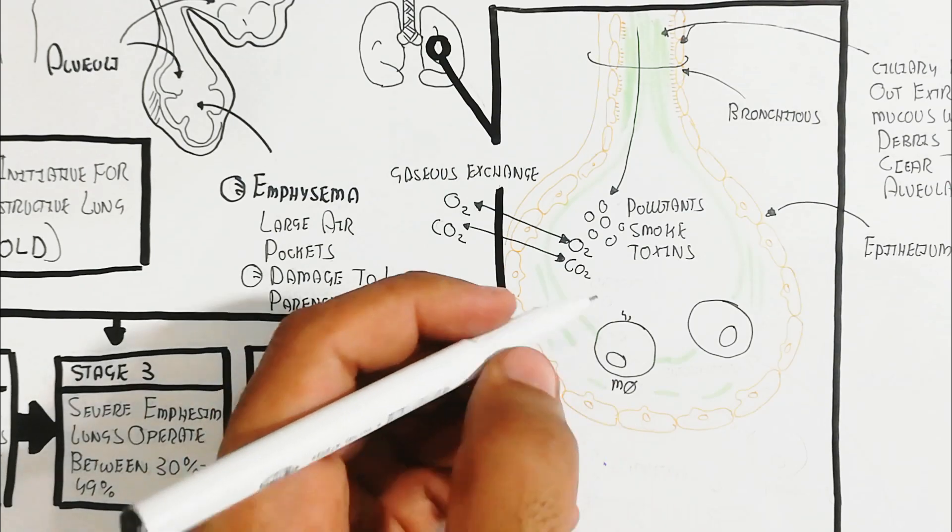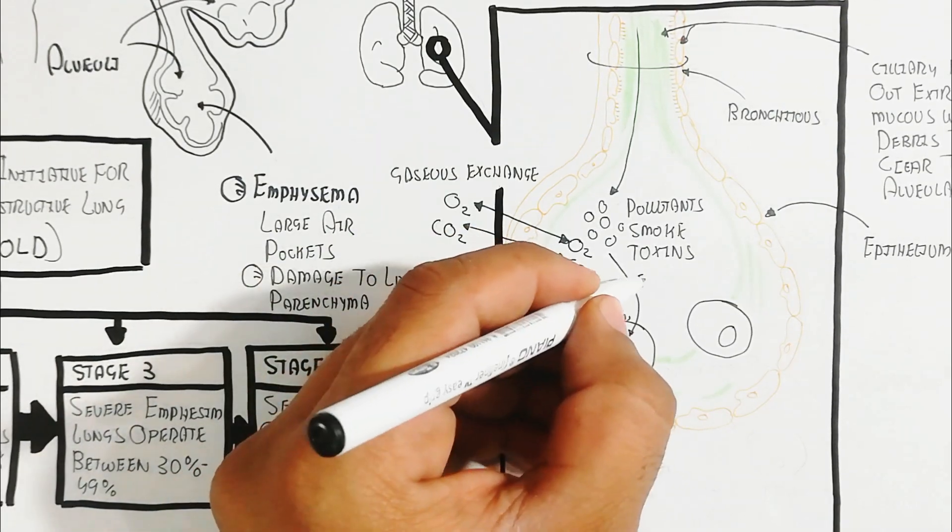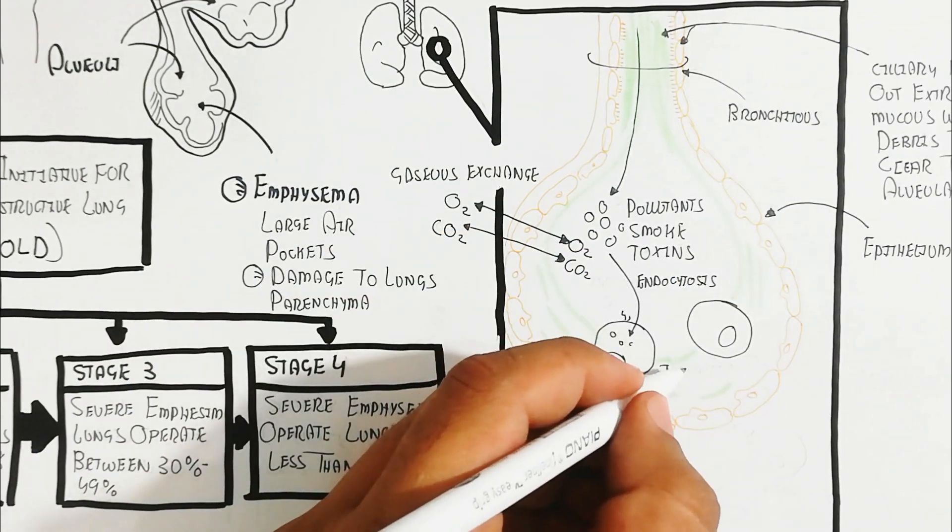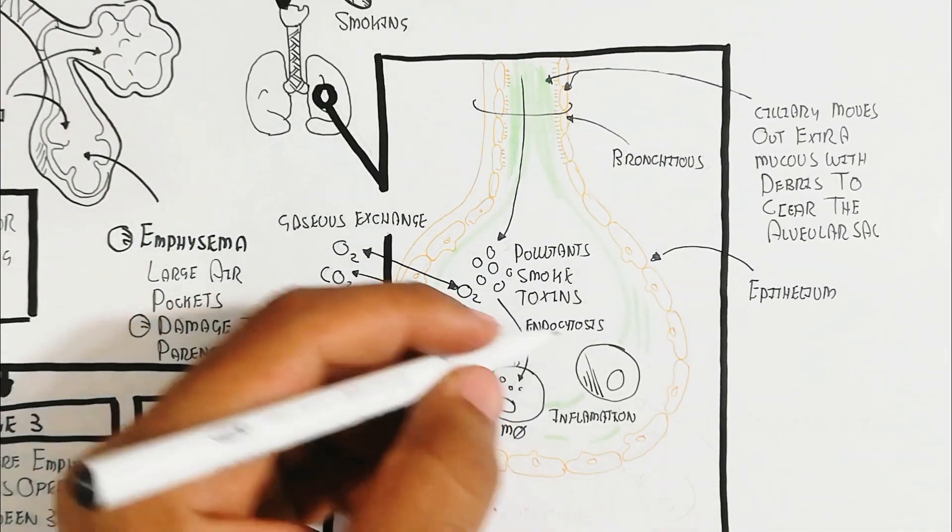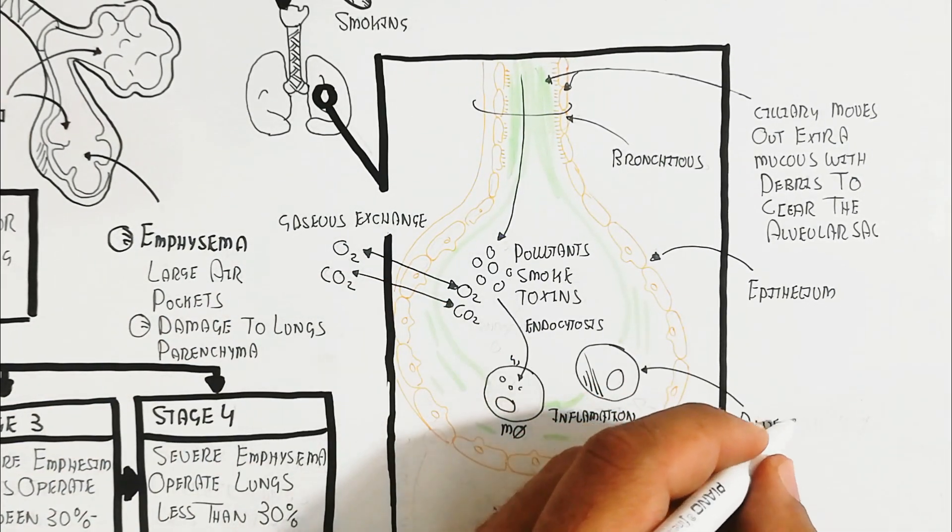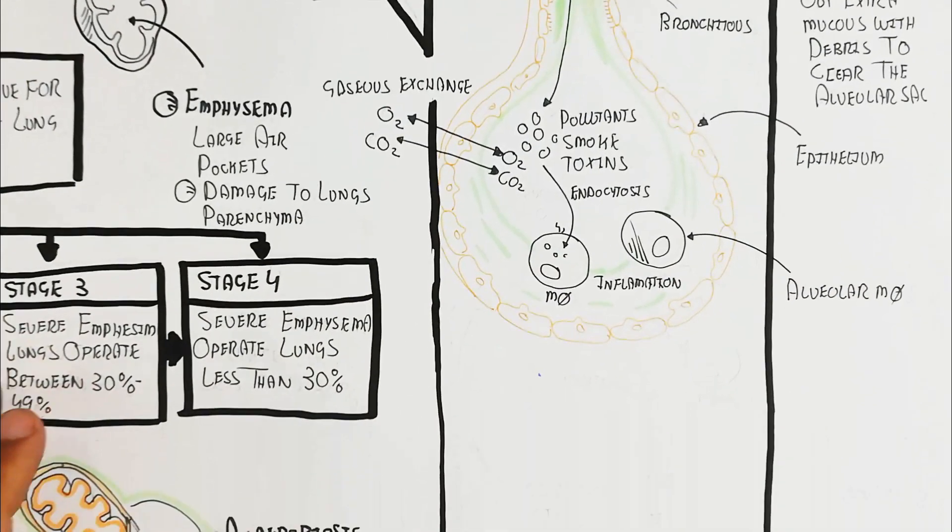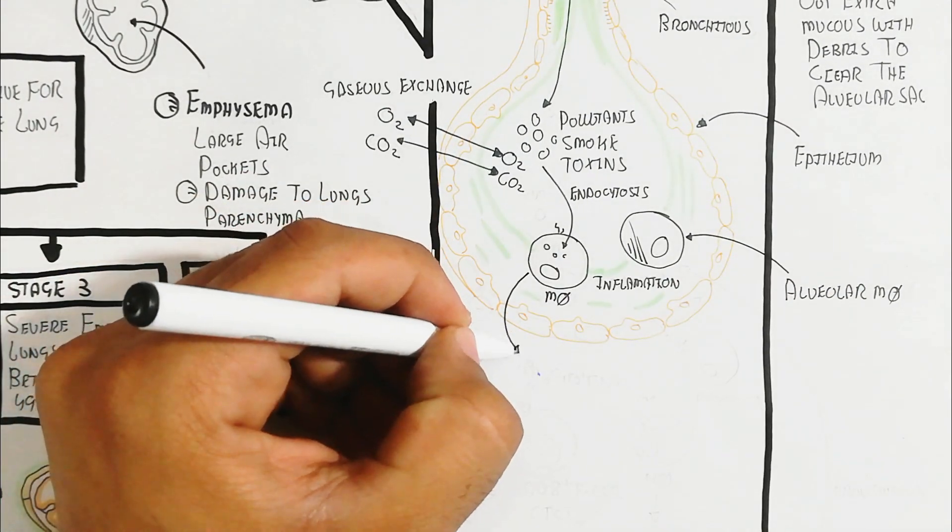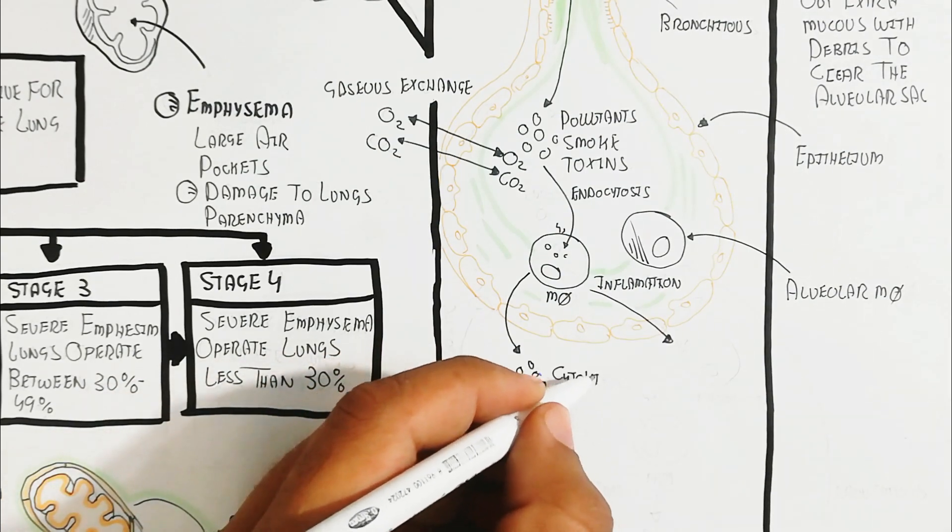Macrophages engulf toxins while gaseous exchange occurs in the air sac. Macrophages live as colonies in the alveolar sac within the surfactant. Surfactant is crucial for dilation and constriction of the air sac for complete respiration.